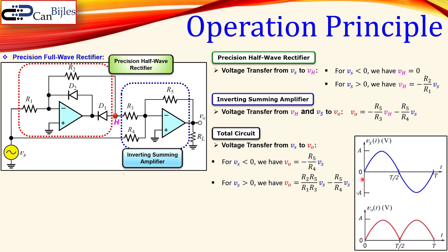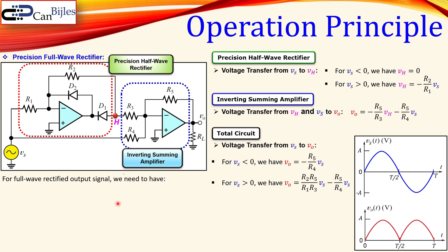In total we have five resistors. What we want is, for a pure sine wave with amplitude A and period T, the VO which is the full wave rectified output — the absolute value of the sine wave — must be produced. Mathematically, for VS less than zero the negative cycle must be flipped, so Vout must equal minus VS, as shown here.